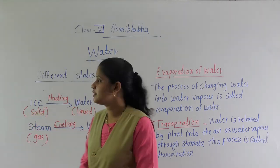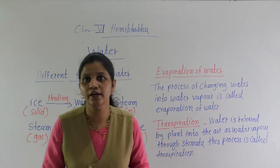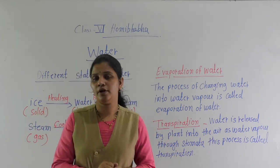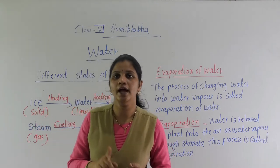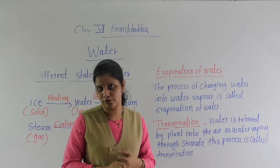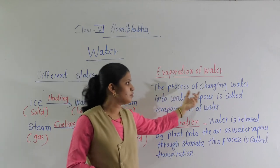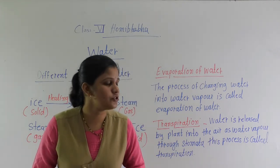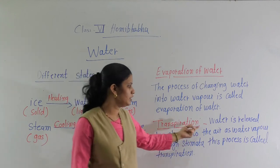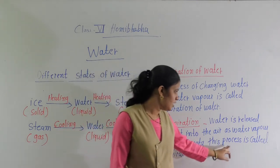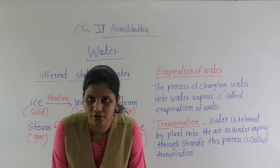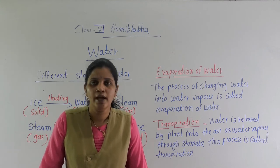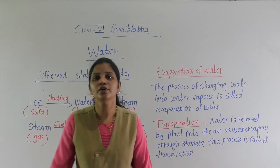So, today what we discussed: the three states of water — solid, liquid and gas. Examples: if the question is related to water, remember the examples are ice, water, and water vapor or steam. Then evaporation — the process of changing water into water vapor is called evaporation. And transpiration — water is released by a plant into the air as water vapor through stomata, and that process is called transpiration. Read the related points in your textbook and the remaining points we will continue in the next lecture. Thank you.